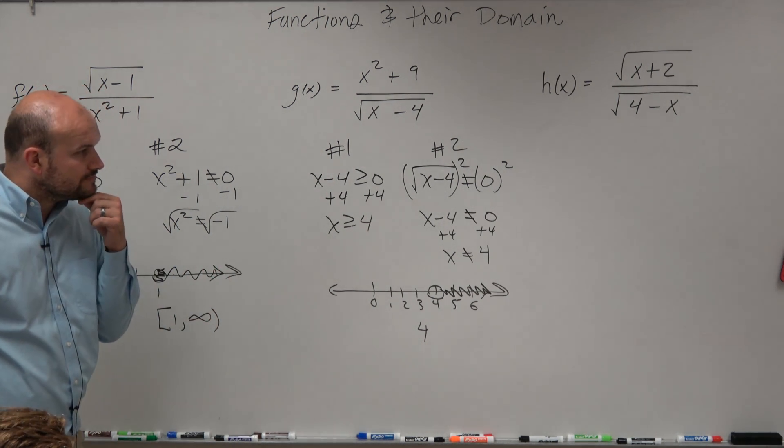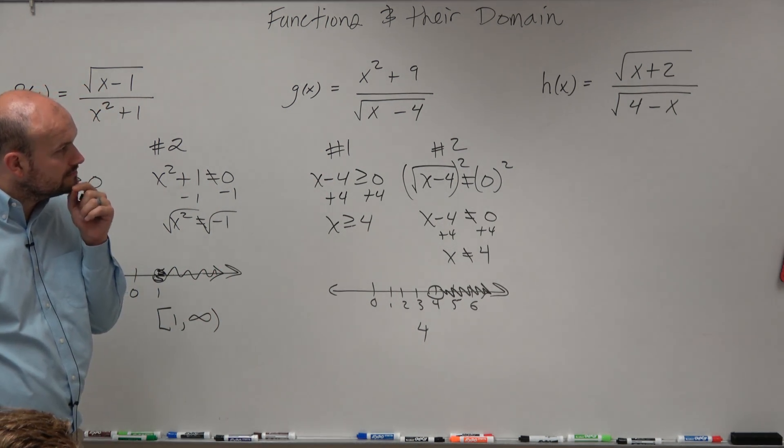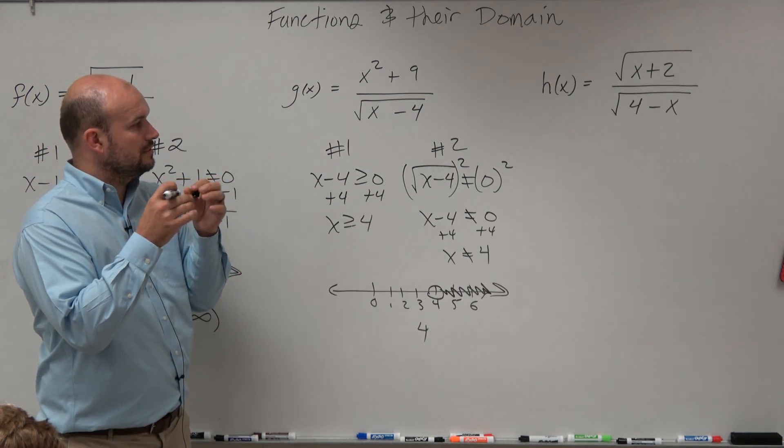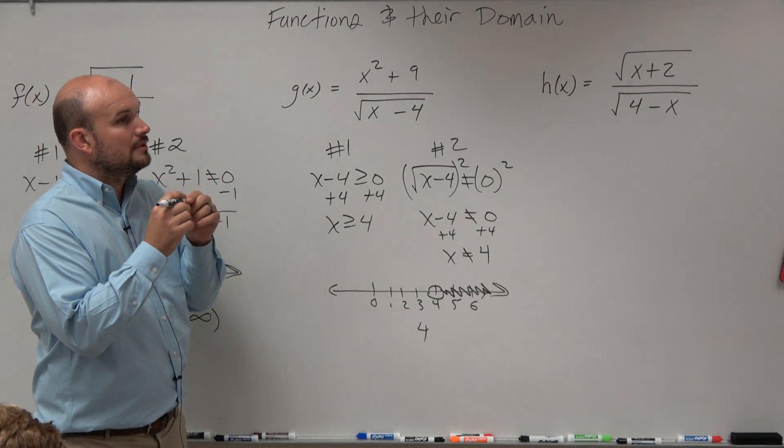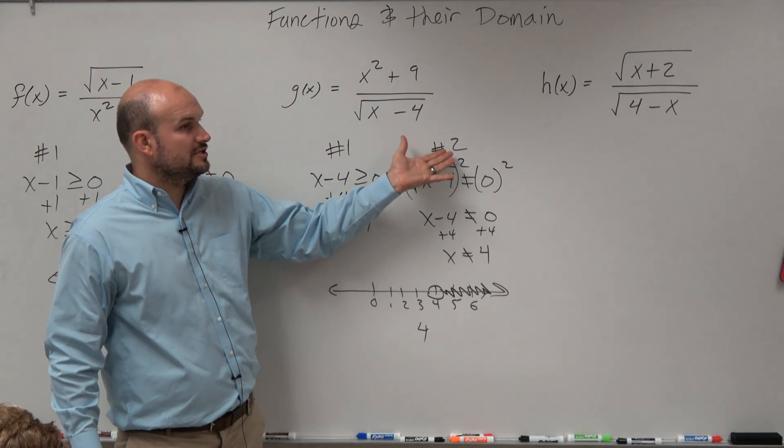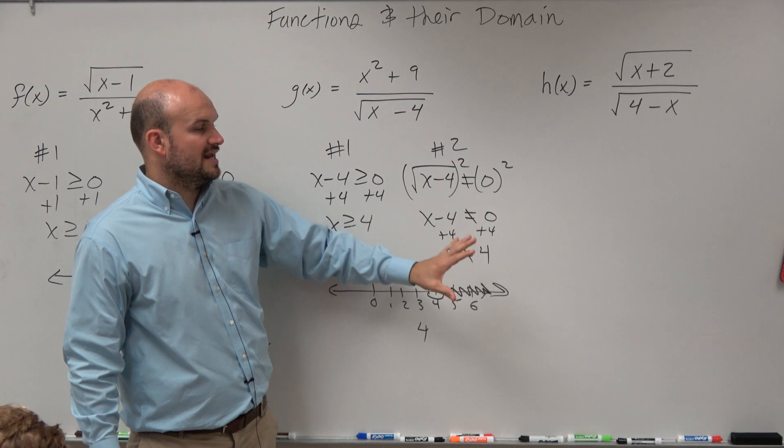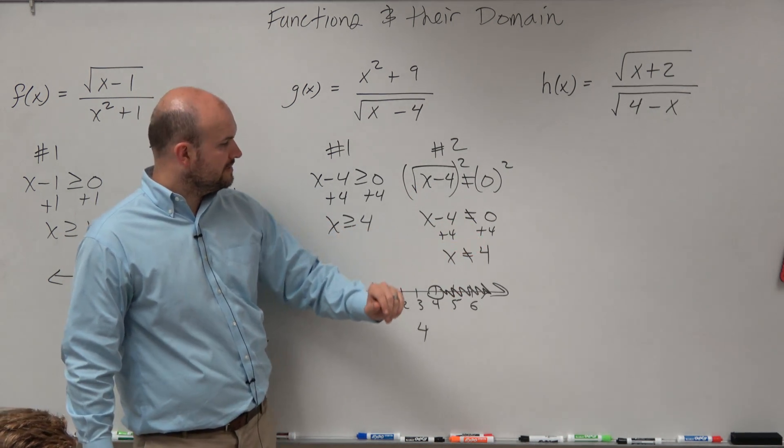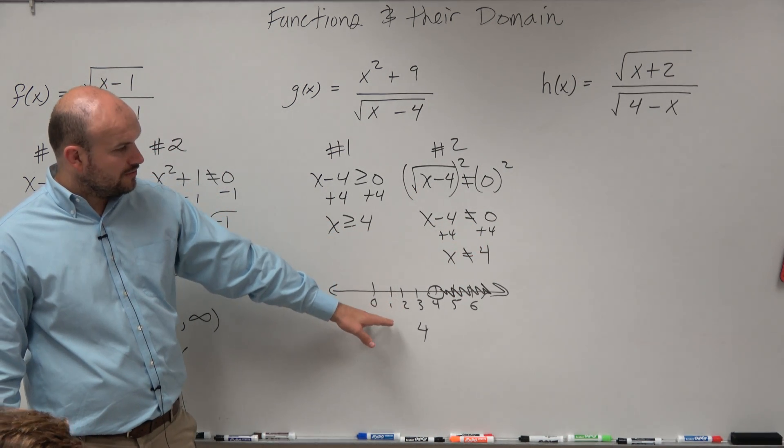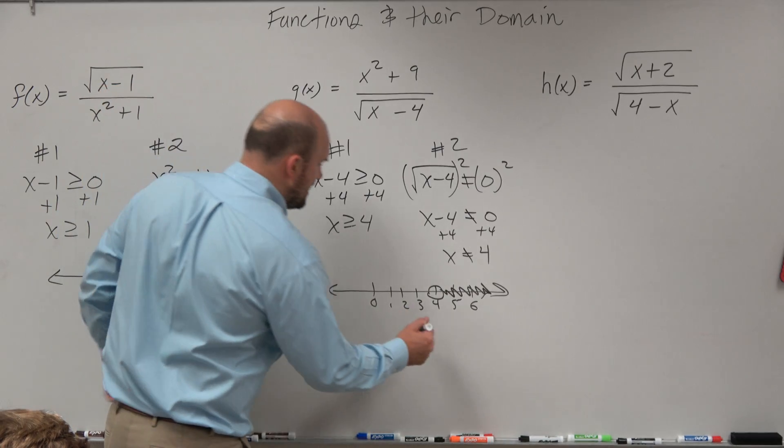Why, for number 2, why is it radical x minus? Because, remember, for restriction number 2, that's whatever is in the denominator cannot equal 0. So now, all we're simply going to do, we have 4 comma infinity.